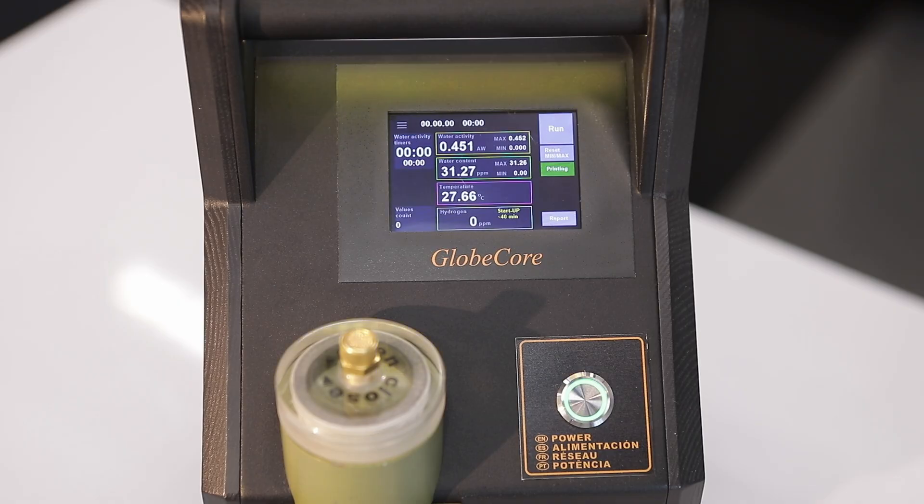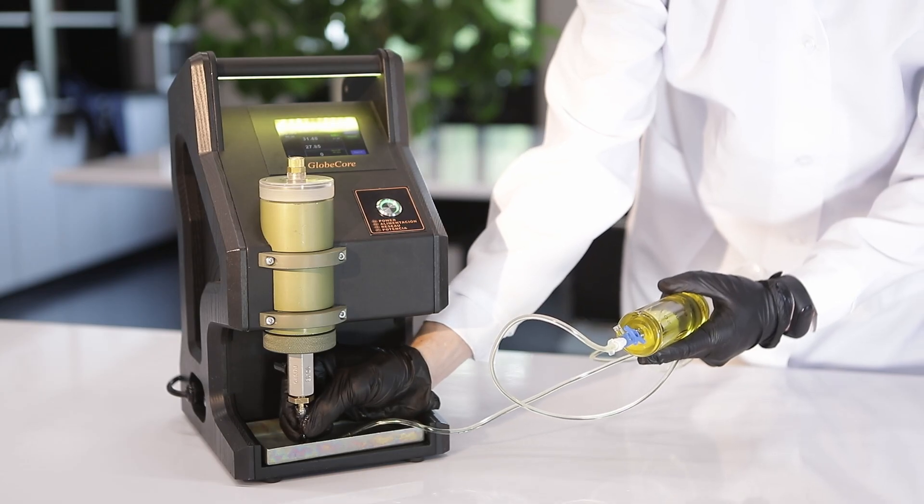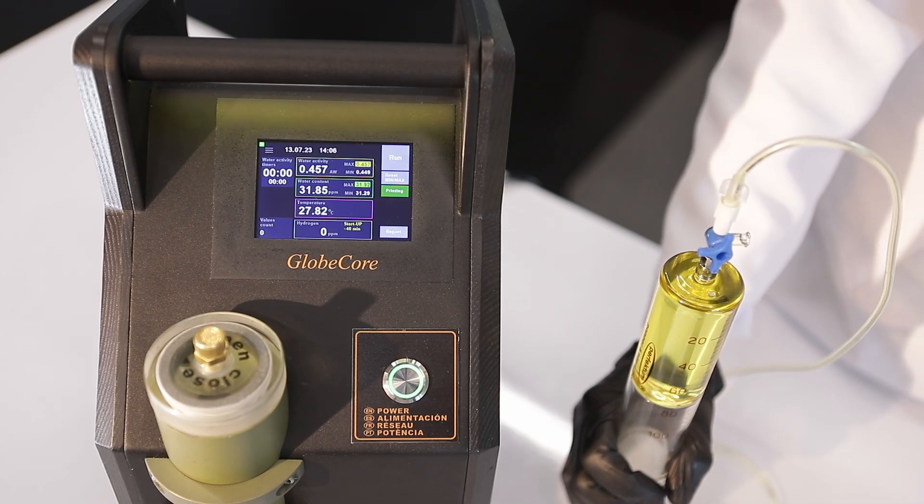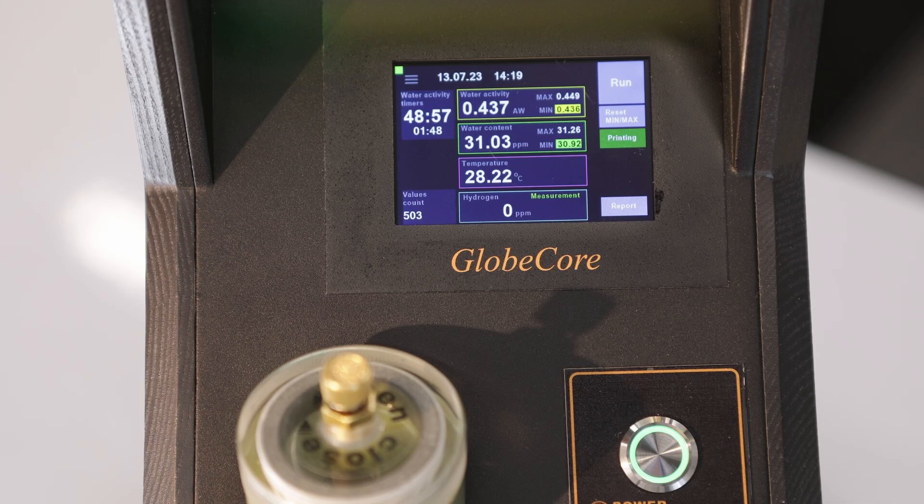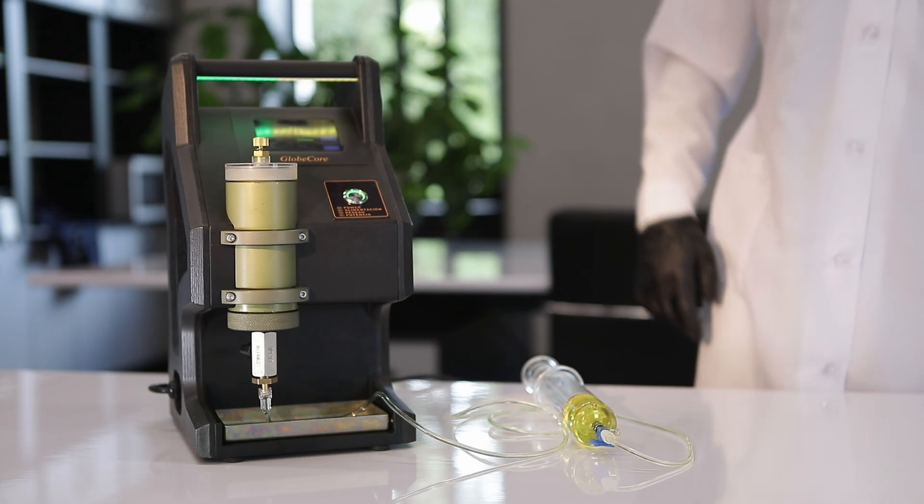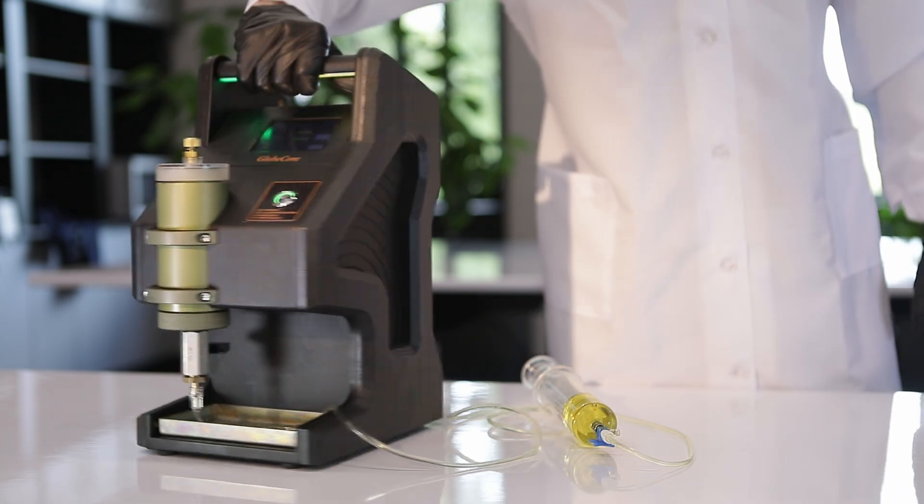After sampling, you have to turn the device on and start the measurement process. The first results of the dissolved gas and moisture analysis of transformer oil will appear on the LCD panel in 10 minutes.